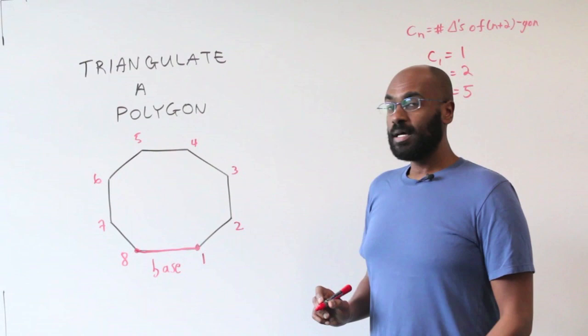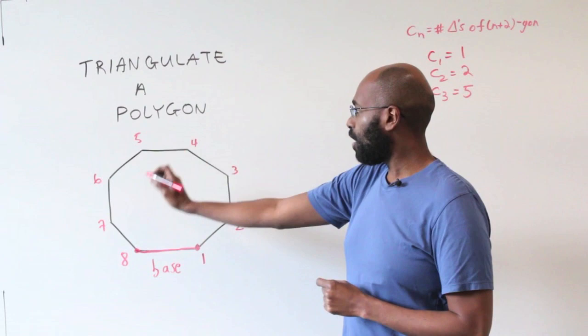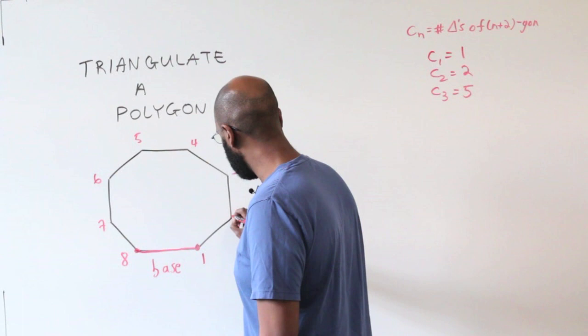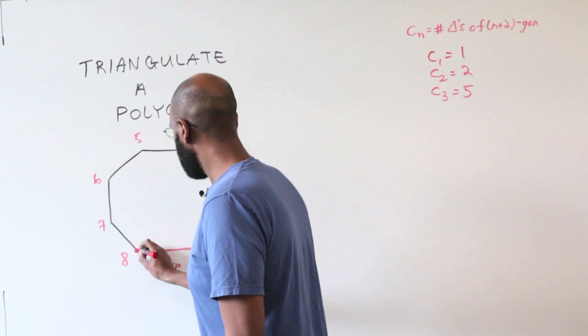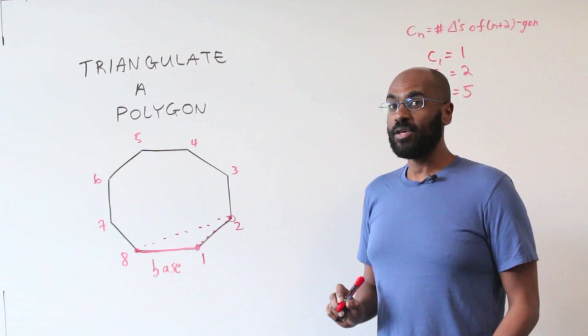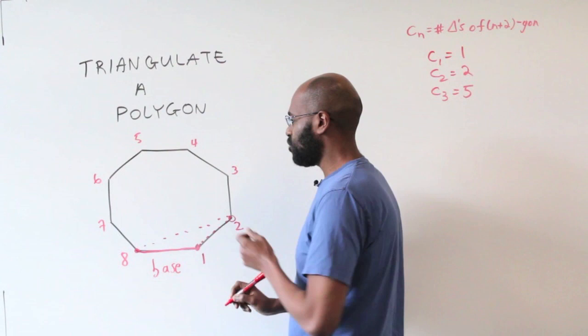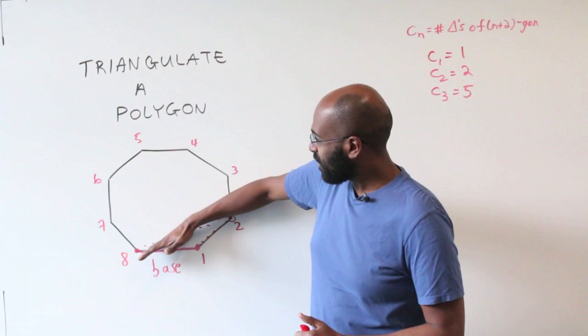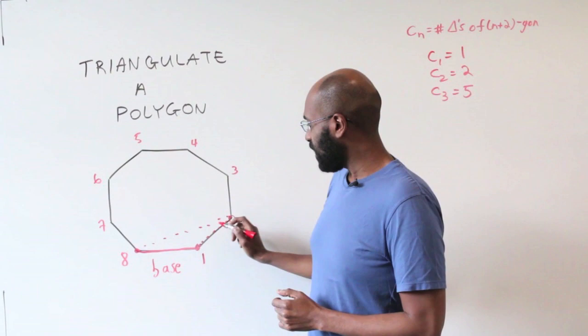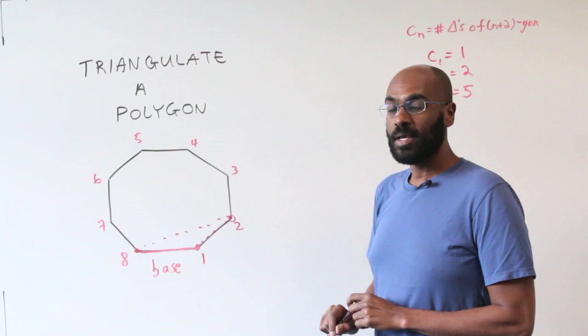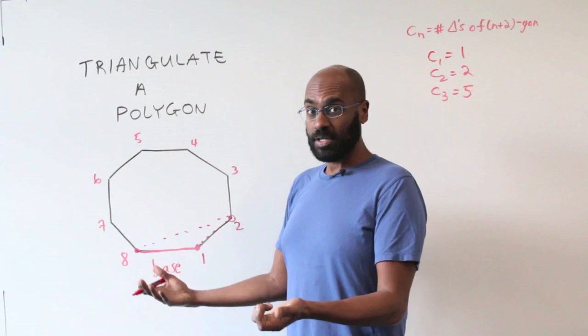Let's analyze what happens when the third vertex moves through all possible positions. Starting with the third vertex at vertex 2, our triangle looks something like this. The number of triangulations in which this triangle appears can be thought of as the number of triangulations of the rest of this polygon. But the rest is a polygon with exactly 7 sides, with vertices running from 2 through 8 inclusive. So the number of these is the number of triangulations of a 7-gon, and that number is C_5.